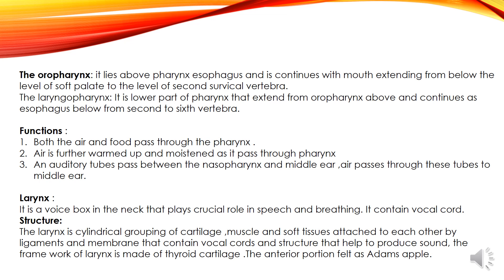The oropharynx lies above the pharynx esophagus and continues with the mouth, extending from below the level of the soft palate to the level of the second surgical cervical vertebra. The laryngopharynx is the lowest part of the pharynx; it extends from the oropharynx above and continues at the esophagus below, from the second to sixth vertebra. Both air and food pass through the pharynx. Air is further warmed up and moistened as it passes through the pharynx. An auditory tube passes between the nasopharynx and the middle ear, and air passes through these tubes to the middle ear.